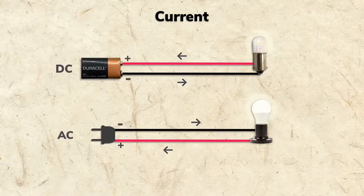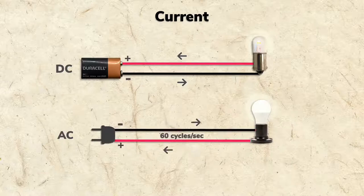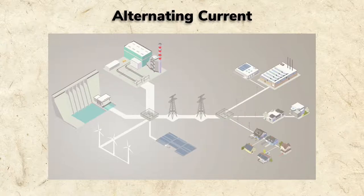Household wiring is AC, and if you live in America, it alternates 60 times a second.